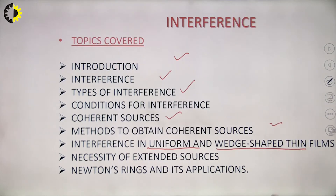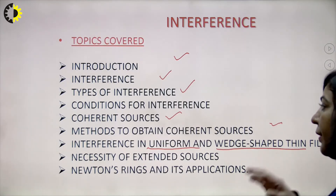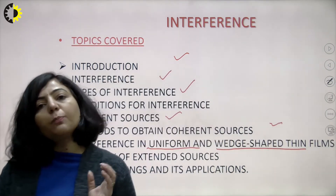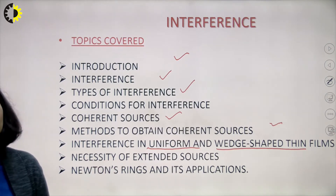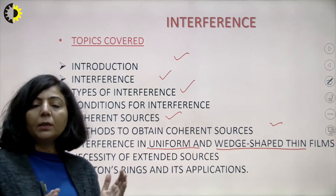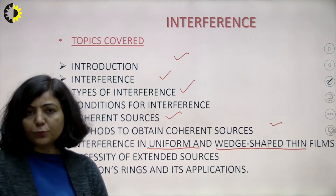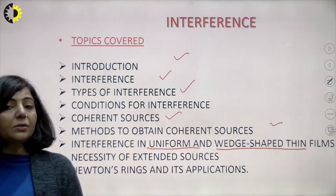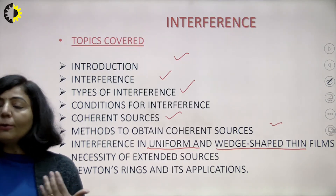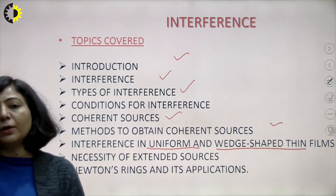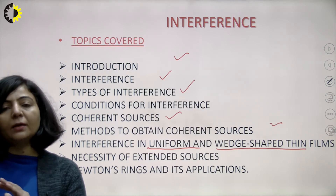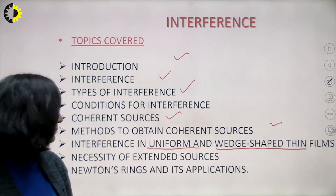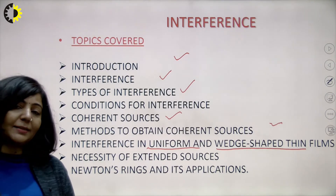We have discussed the necessity of an extended source of light. If there is a point source of light, we can see only a small part of the thin film at one time. But if we have an extended source of light, different parts of the thin film will be illuminated and we can see the entire thin film at one fixed position of the observer. That is the necessity of an extended source.